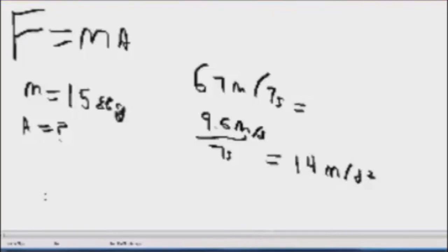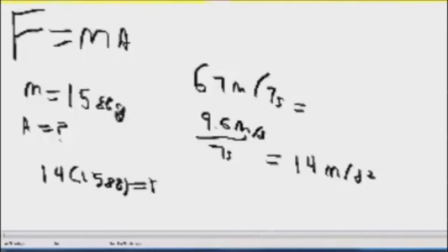Now to find the F-net, we will take 1.4 and multiply that by 1,588. This equals our F-net, and F-net is equal to 2,223 newtons.